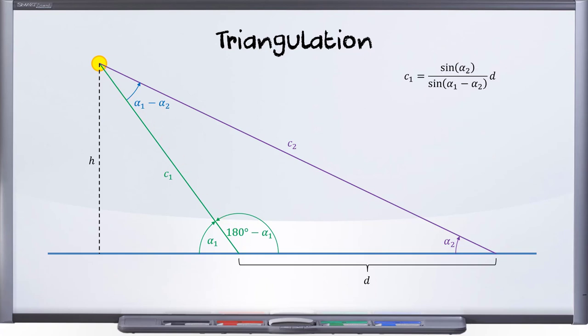If we look right over here, we'll see there's a right triangle right there, and we have this angle alpha one, and we now know the length c1, and that's the hypotenuse of our right triangle. The sine of the angle is opposite divided by hypotenuse. So the sine of alpha one is opposite divided by hypotenuse.